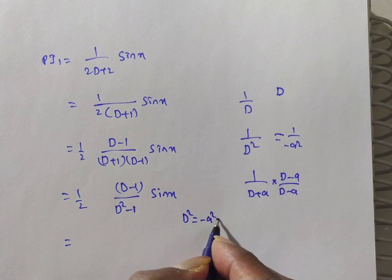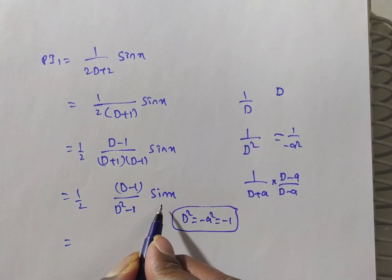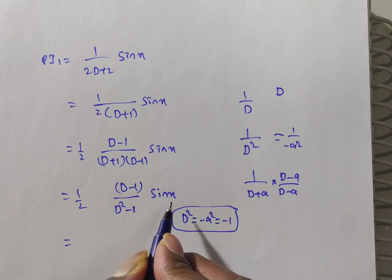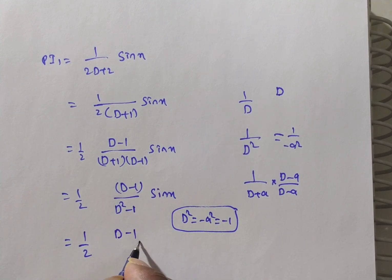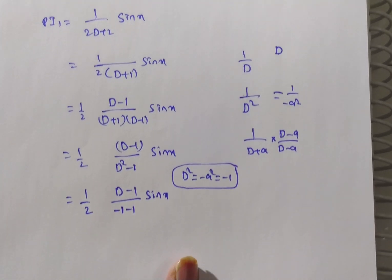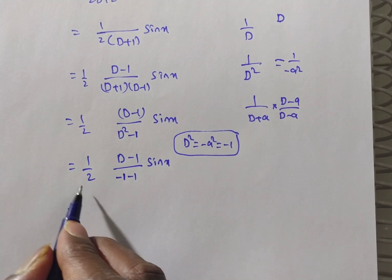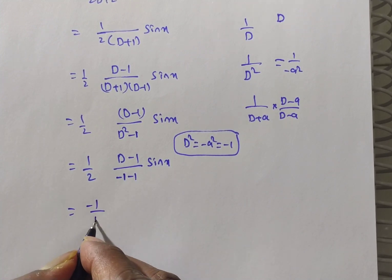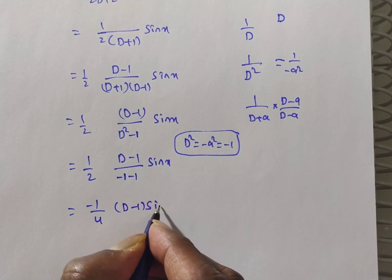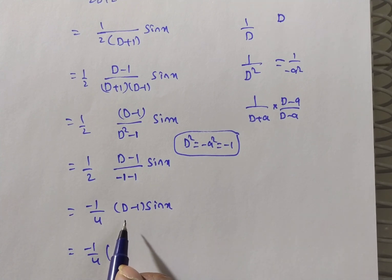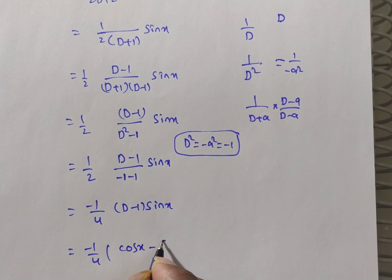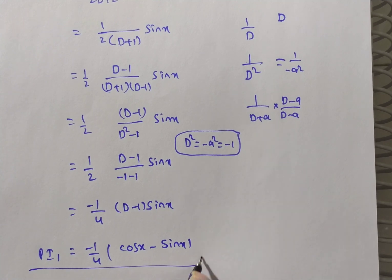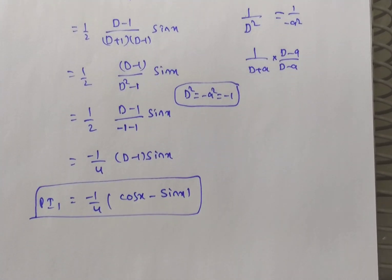With D² = -1, the denominator is -2, so PI₁ = (1/2) · (D - 1)/(-2) · sin x = -1/4 · (D - 1) · sin x. Since D in the denominator means integrate, but here D is in the numerator: D(sin x) = cos x and -1·sin x = -sin x. Therefore PI₁ = -1/4 · (cos x - sin x).